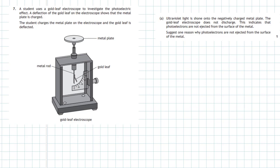Part A of question 7 asks: ultraviolet light is shone onto the negatively charged metal plate. The gold leaf electroscope does not discharge. This indicates that the photoelectrons are not ejected from the surface of the metal. Suggest one reason why the photoelectrons are not ejected from the surface of the metal.